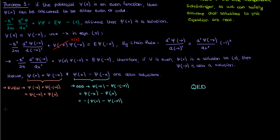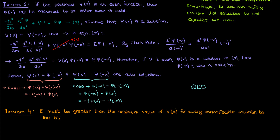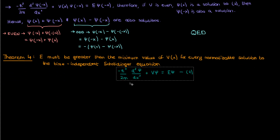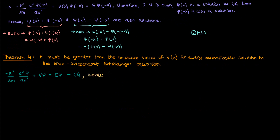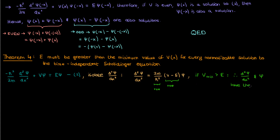The final theorem states that E must be greater than the minimum value of the potential V(x) for every normalizable solution to the time-independent Schrödinger equation. Starting from equation 2, we rearrange to isolate the second derivative of small ψ with respect to x. If the minimum value of V is greater than E, then the term in parentheses is always positive, the constant out front is also positive, and as a result the second derivative of ψ and ψ itself must have the same sign — either both positive or both negative.